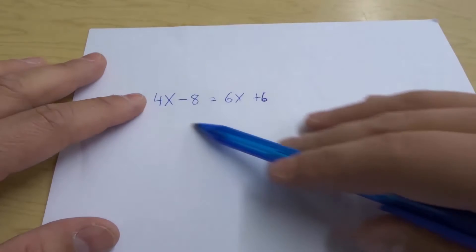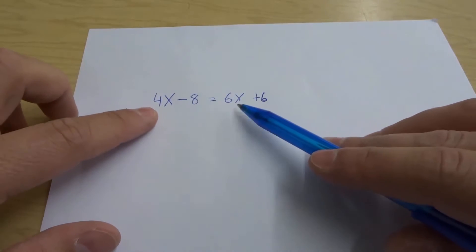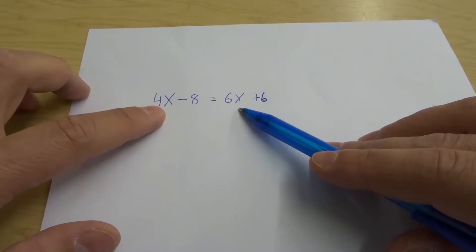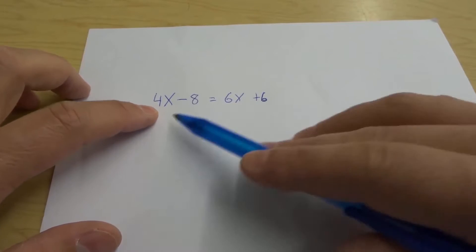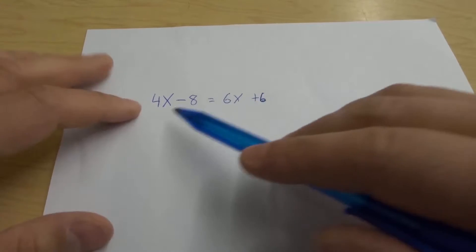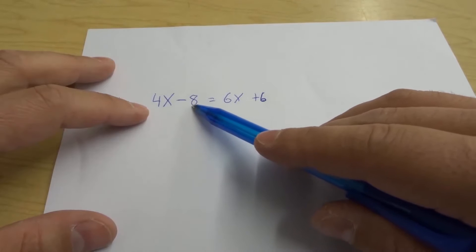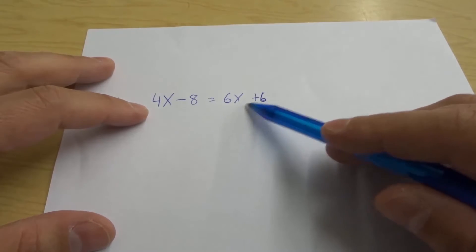As you can see right here we have a linear equation and we have variables on both sides. You can see the variable is 4x on this side and 6x on this side. I'll read it out to you because I know my writing is kind of messy. 4x minus 8 is equal to 6x plus 6.